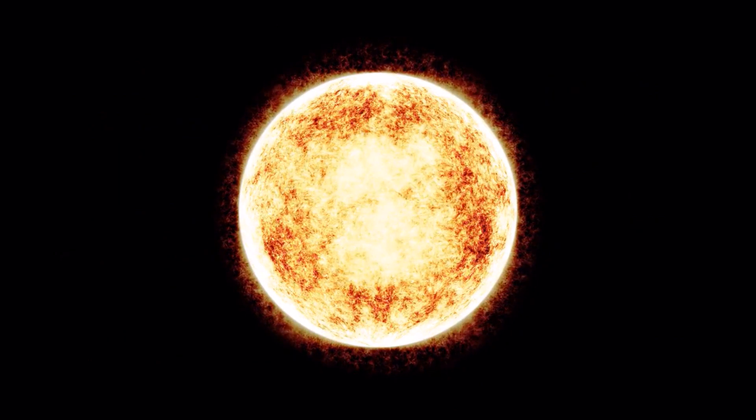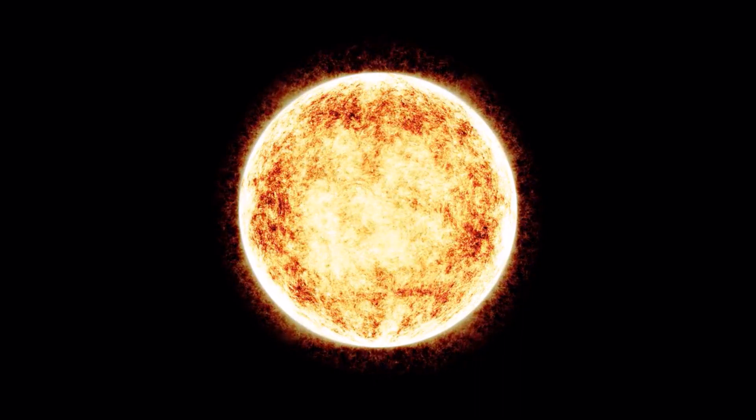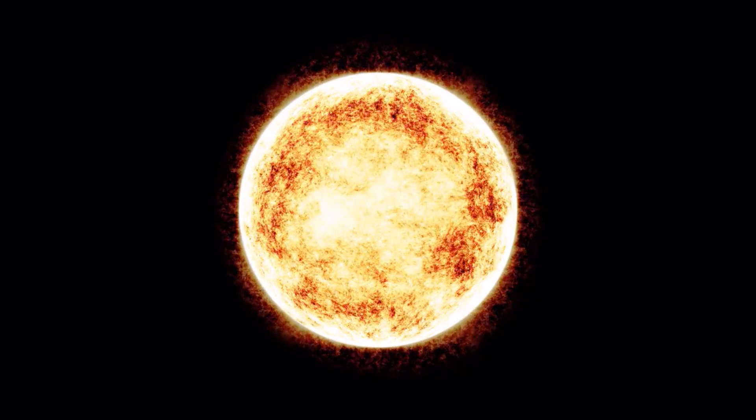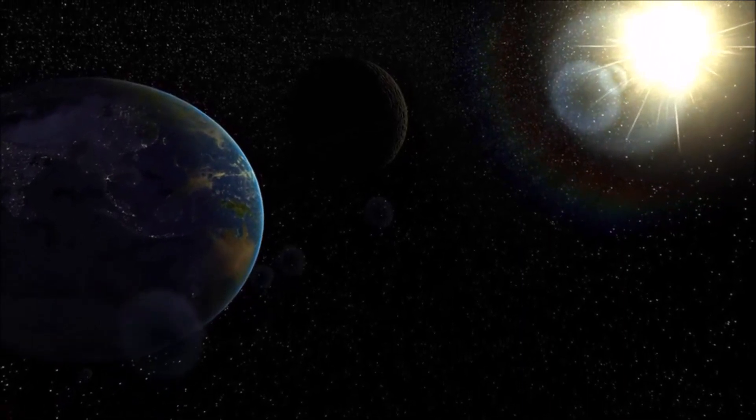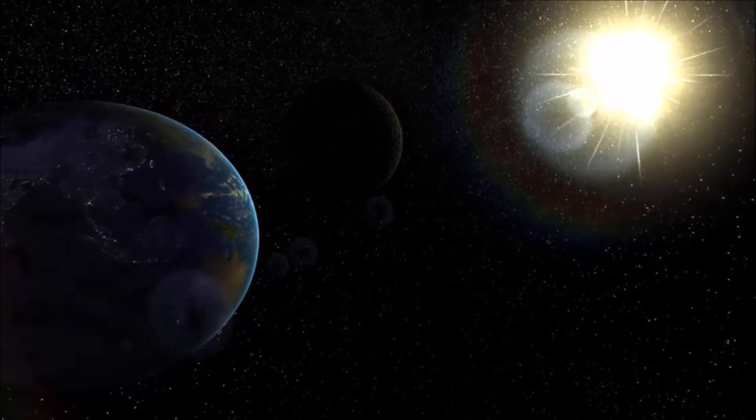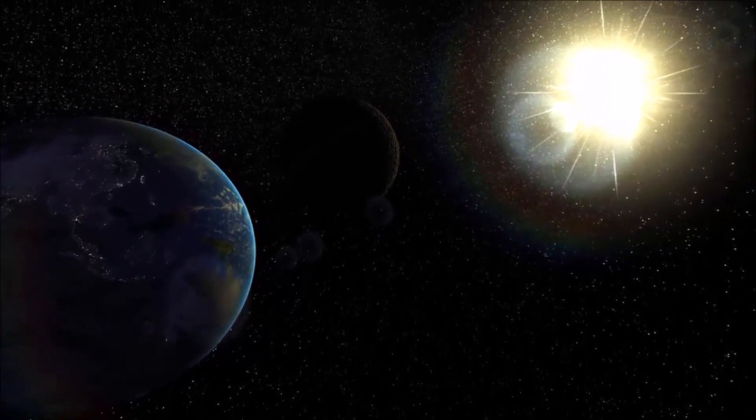Sunspots on the Sun's surface are areas of intense magnetic activity that can be larger than Earth's diameter. The Sun's gravity is about 28 times stronger than Earth's gravity. The Sun's light takes about eight minutes to reach Earth.